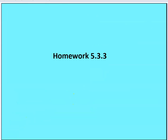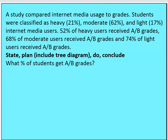This brings us to homework 5.3.4. A study compared internet media usage to grades. Students were classified as heavy, moderate, and light users by percentage — totaling 100. 52% of heavy users received AB grades, 68% of moderate users received AB grades, and 74% of light users received AB grades. You can see a relationship between internet media usage and AB grades. Use a tree diagram — state, plan, do, conclude — to answer: what percent of students get AB grades?